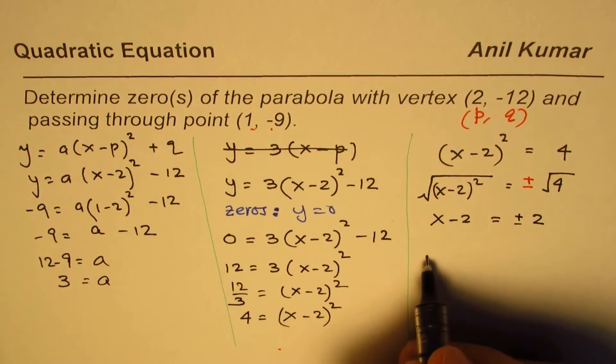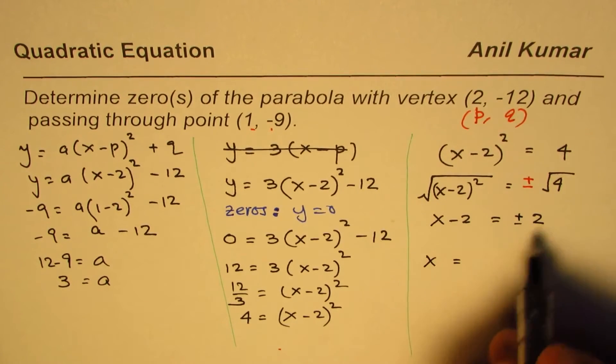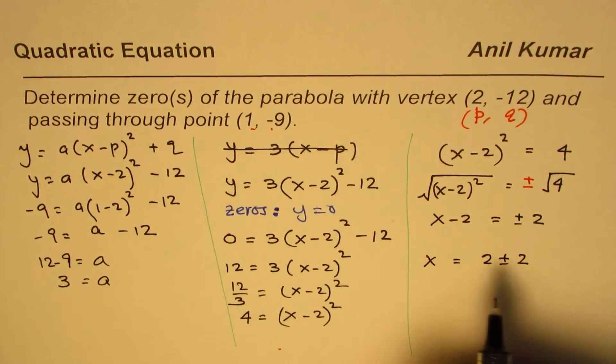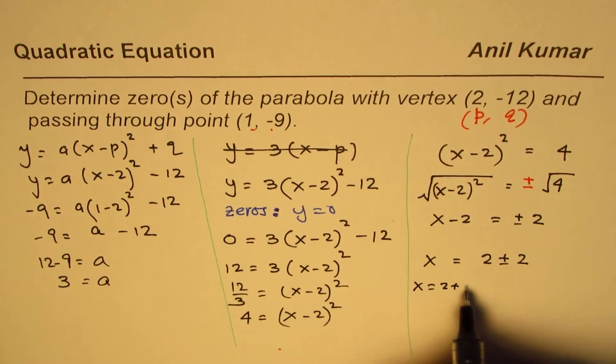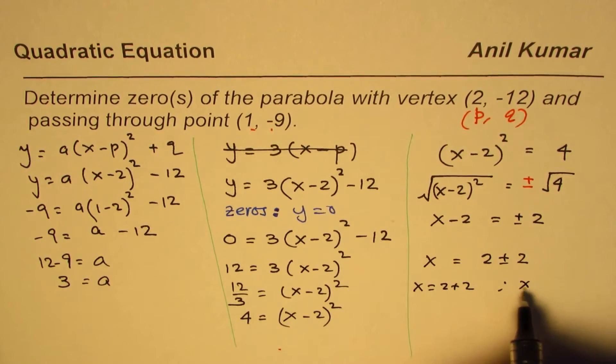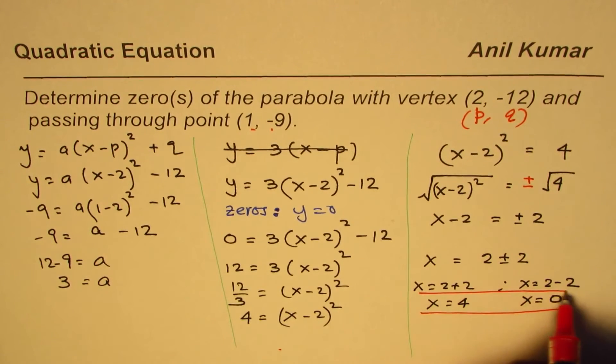So x = 2 ± 2. There are two solutions: x = 2 + 2 = 4, and x = 2 - 2 = 0. These are the two solutions for the given conditions.